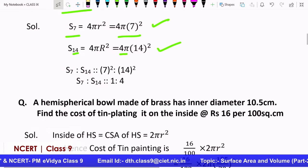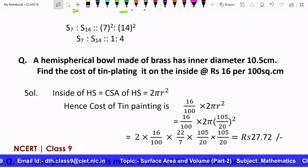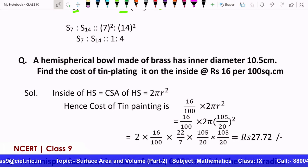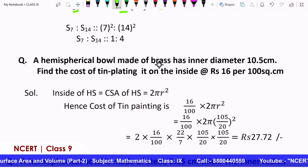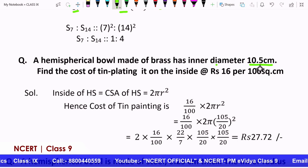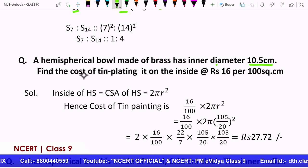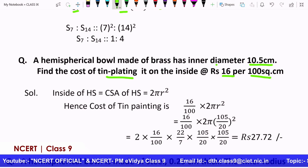Now, next question is: a hemispherical bowl made up of brass has inner diameter 10.5 centimeters. These are application-based questions, how we can extend the formula further. What is this question? A hemispherical bowl is there which is having an inner diameter 10.5 centimeters. Again 10.5 is not a random number, even though it's a decimal. Let us see whether it has a purpose or not. Find the cost of tin plating it at the rate of 16 rupees per 100 square centimeters.